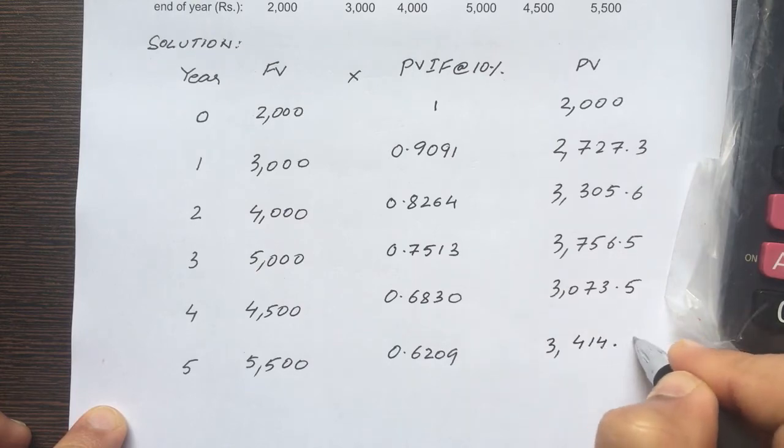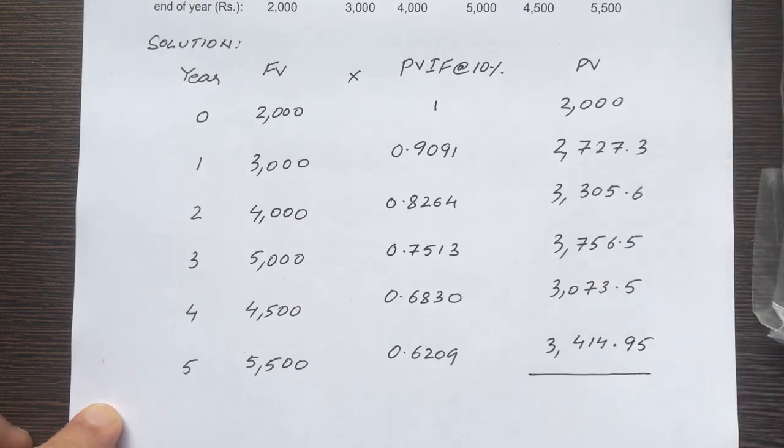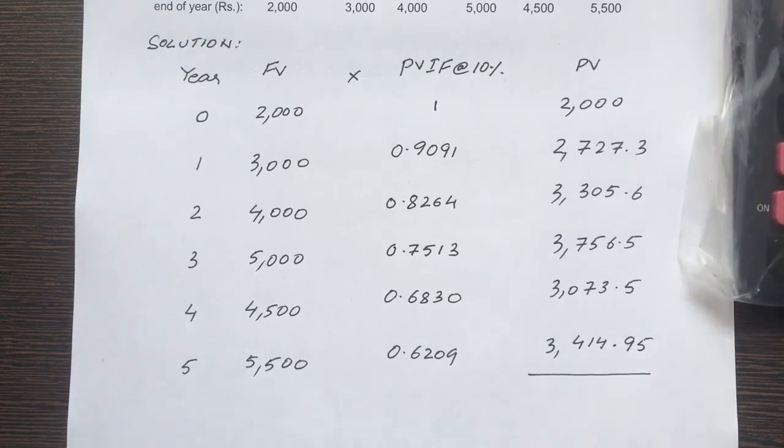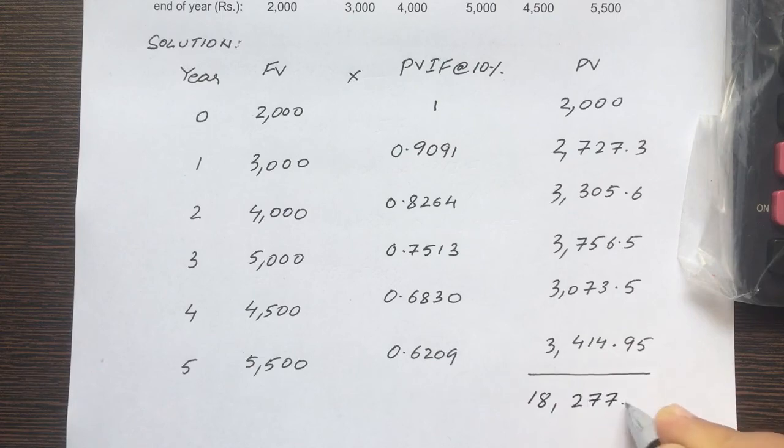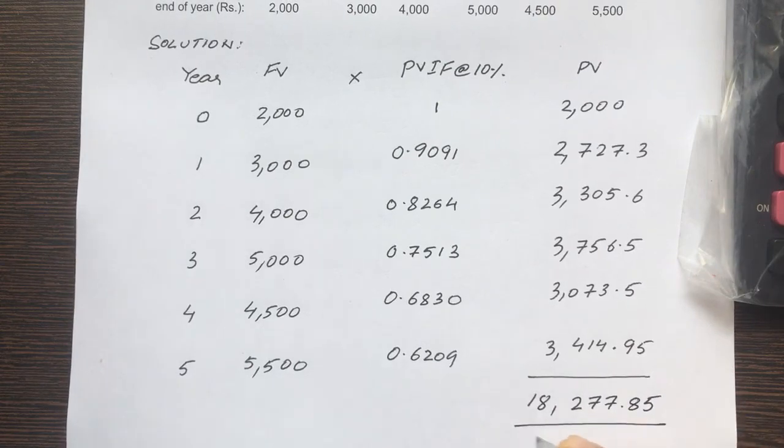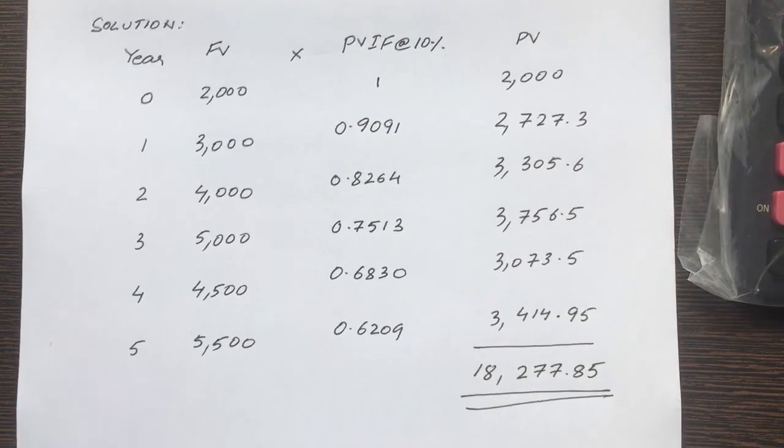So let's add up: 3,414.95 plus 3,073.5 plus 3,756.5 plus 3,305.6 plus 2,727.3 plus 2,000 equals 18,277.85. So that is the solution to the problem.